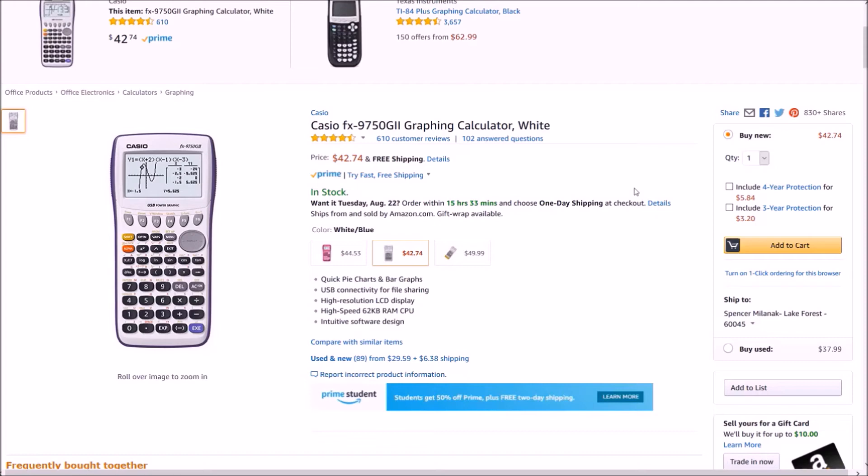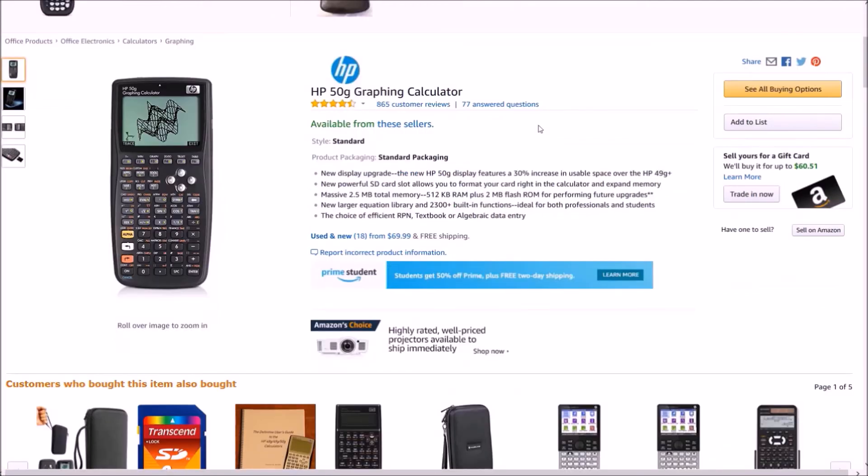If you don't want to buy from TI, I'd recommend the Casio FX-9750 GII. This is also a very solid calculator, as well as the HP 50G graphing calculator. Again, links to all these will be in the description to buy on Amazon.